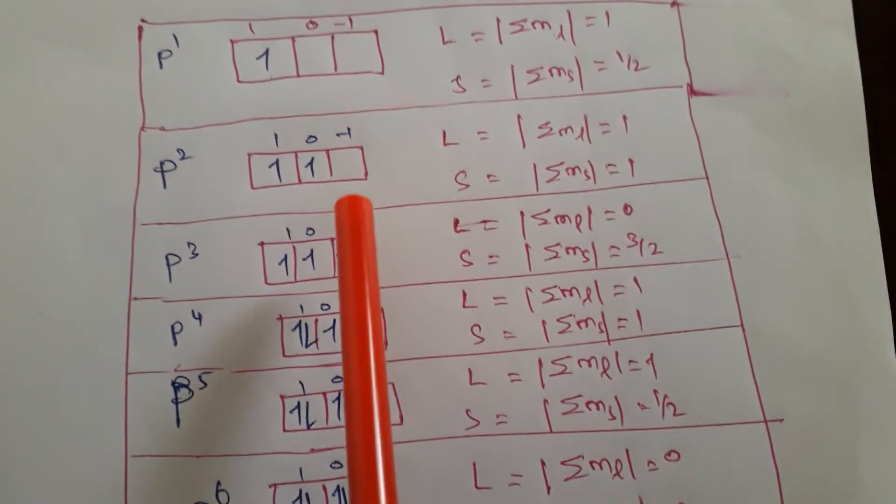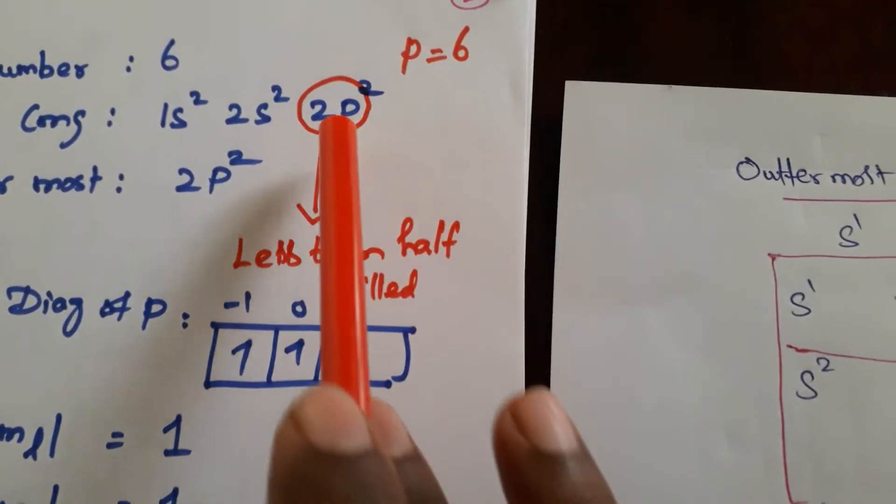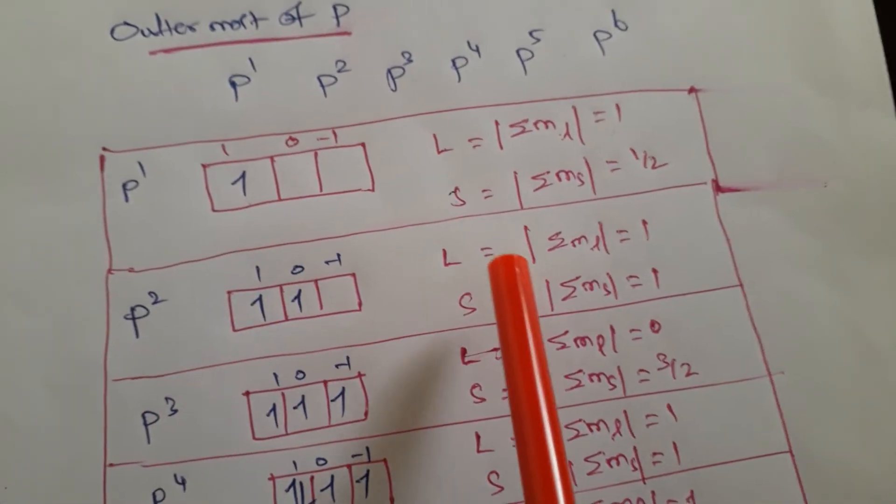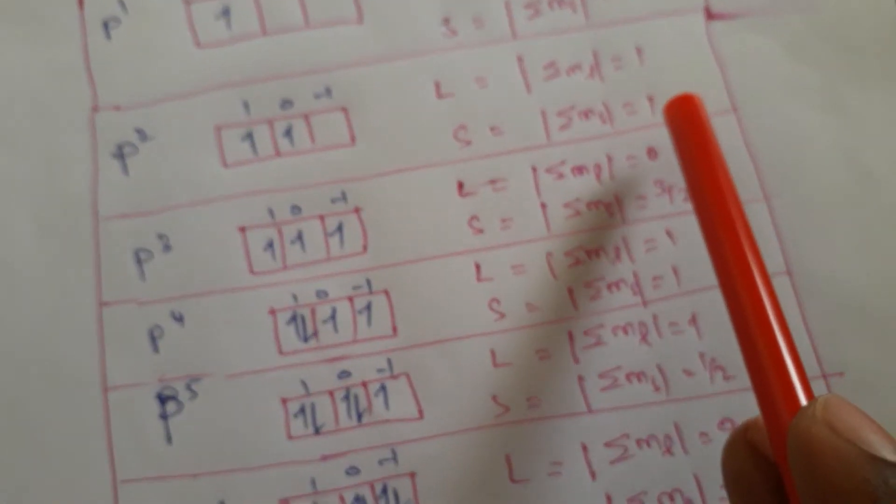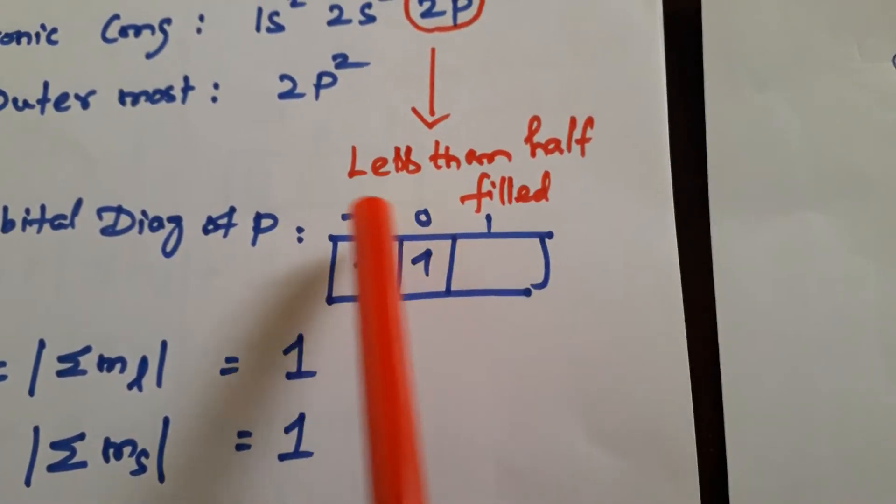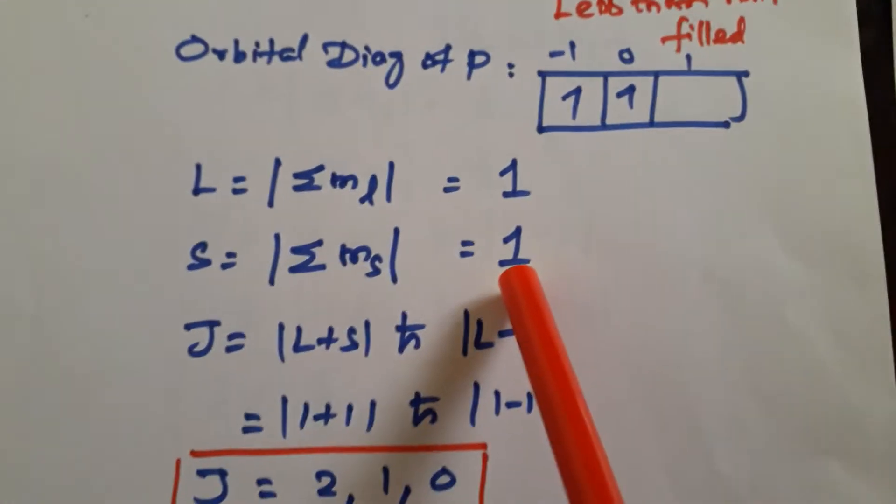And you see this in our previous diagram itself, we mentioned this. Previous video itself, p2. Look at this, this is p2. So for this p2, L value is 1 and S value is also 1. Look at this. How you are getting this? You see this L value, this is the L value 1. And S value, half plus half, that also 1.